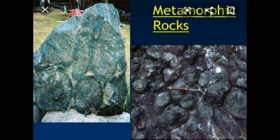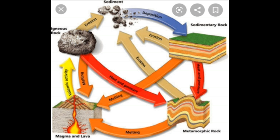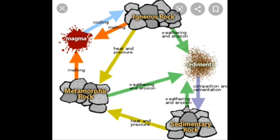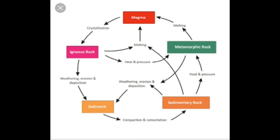Diamond is also a metamorphic rock. Now we will learn about the rock cycle. Rocks are constantly being formed, destroyed, and reformed in a process known as the rock cycle. Igneous rocks are the original rocks; they get eroded over millions of years and the sediments get deposited, forming sedimentary rocks. When pushed deeper, they turn into molten lava which cools once again to form igneous rocks. Over time, sedimentary and igneous rocks get buried deep underground where heat and pressure transform them into metamorphic rocks.